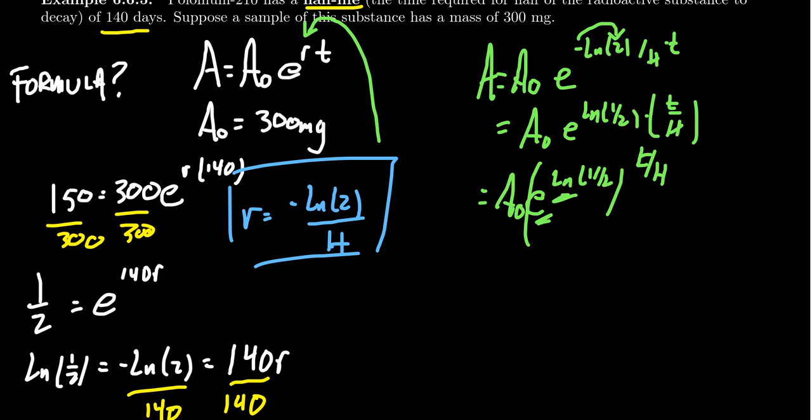Since we have a product of exponents, I can factor the exponents and get A₀ times e to the ln(1/2) raised to the t over h. The reason I want to do that is the natural exponential and natural log are inverses of each other. They cancel out and you end up with A equals A₀ times one-half to the t over h power, where h is the half-life.